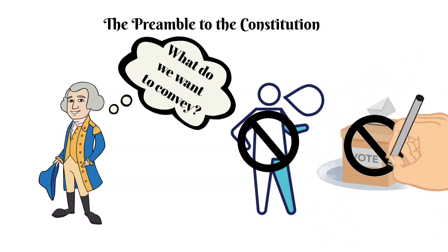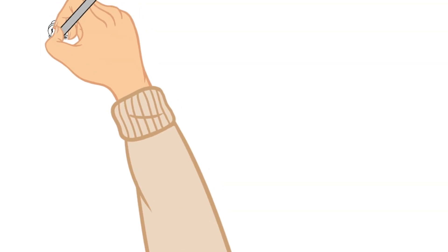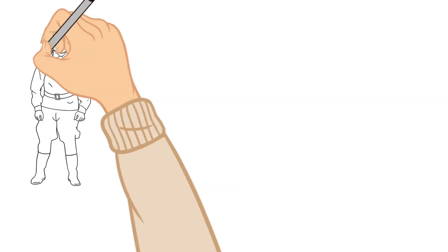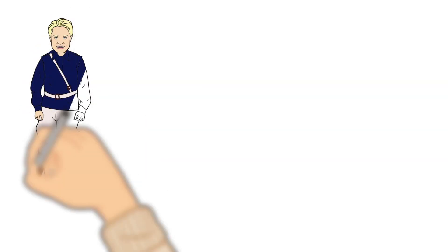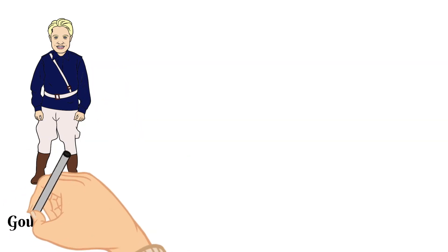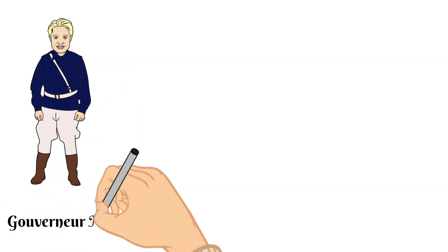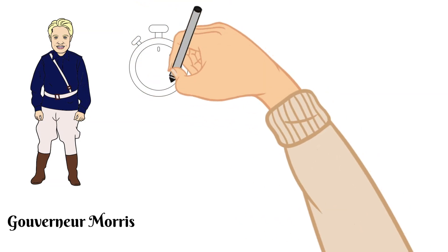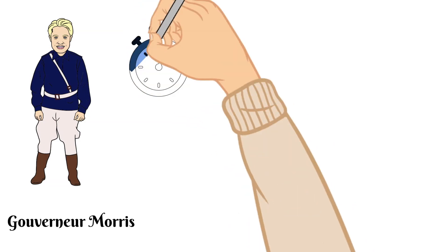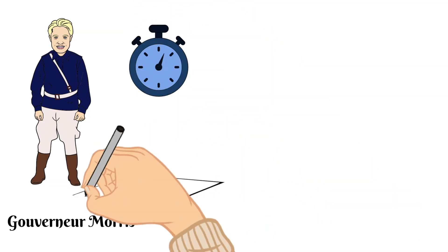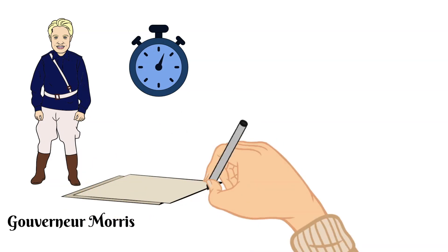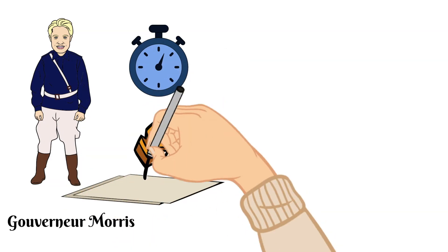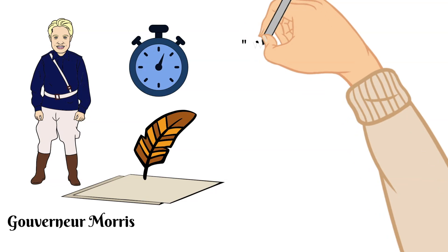The man who wrote the preamble to the United States Constitution was Gouverneur Morris, and he added it, like I said, at the very last minute. So for today I really wanted to break down each part of the preamble and discuss it more fully and completely. So let's jump into the preamble.